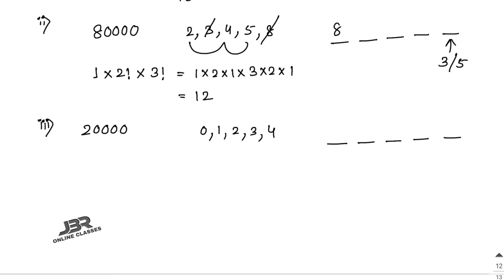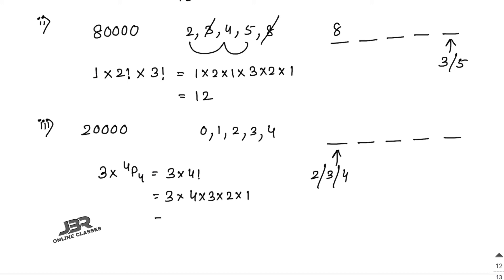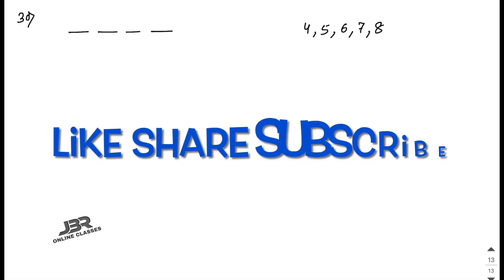Part three: how many numbers greater than 20,000 can be formed using digits 0, 1, 2, 3, 4 with no digit repeated? Total 5 places. First place must be 2, 3, or 4 (greater than 20,000) — 3 choices. Remaining 4 places: 4P4 = 4! = 24 ways. Total = 3 × 24 = 72.